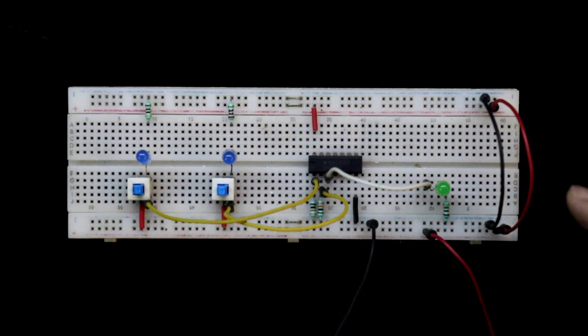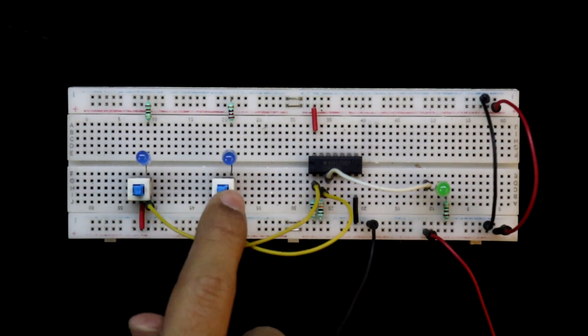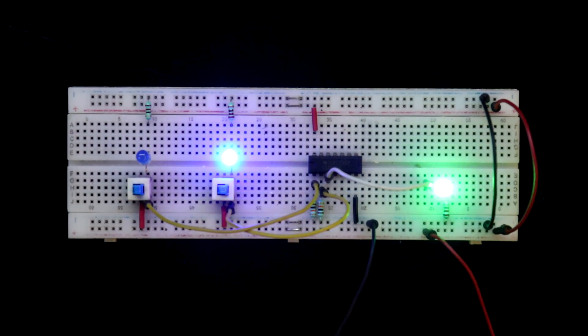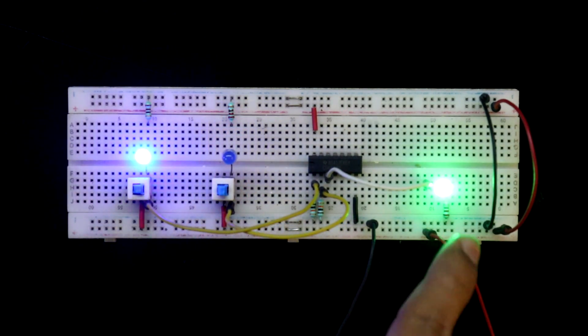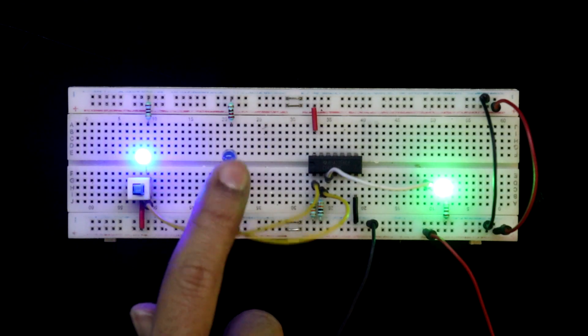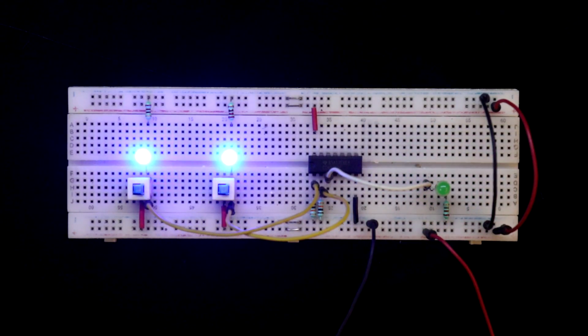Both inputs are 0. We are getting 0. One input is 1. We are getting 1. Another input is 1. We are getting 1. And whenever both the inputs are 1, we are getting 0.